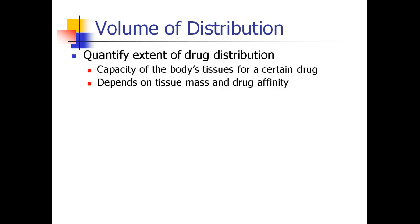As we talk about distribution, we should think about a concept called volume of distribution. This is a topic that confuses people a little bit. The volume of distribution allows us to quantify the extent of drug distribution, that is, how much is the drug being moved around to other tissues. What's the capacity of the body's tissues for this specific drug? And it depends on the patient's tissue mass and the affinity of the drug for that tissue. So every patient and every drug are going to have a slightly different result.